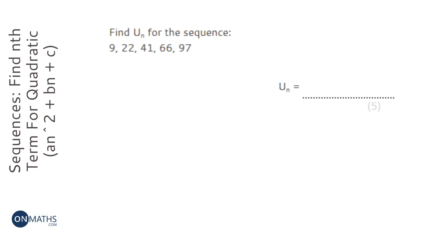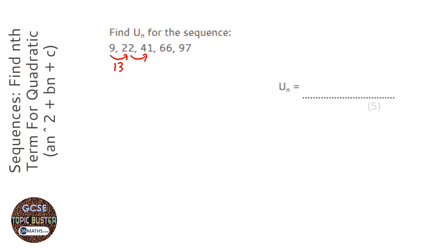We're asked to find the nth term of the sequence. The first thing I need to do is work out what the sequence is going up in. So 9 to 22 will be 13, 22 to 41 would be 19. It's not the same.